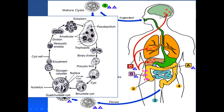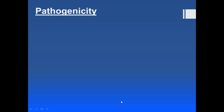To summarize the life cycle: mature cysts are ingested and reach the large intestine, excystation occurs, the trophozoite is formed, it causes pathogenicity, then some trophozoites are converted into cysts, those cysts are excreted in the feces, and the cycle repeats.